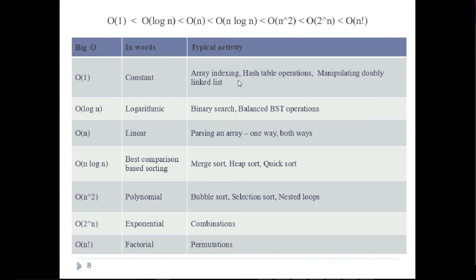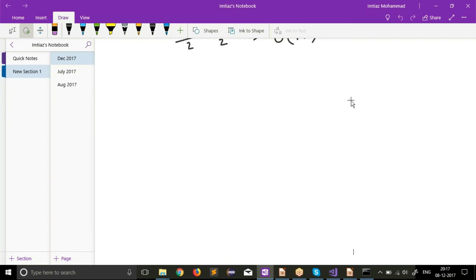To summarize — array indexing gives you constant time because you directly access an item in the array. Hash tables are very useful and important data structures, not only from an interview perspective but practically. Let's say we have a requirement of finding something very quickly — we have some numbers and we want to quickly check whether something is part of the list or not. Typically you do a linear search which is O(n).